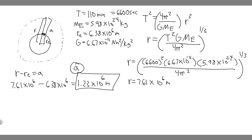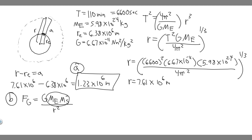Now let's move on to Part B. We're trying to find the value of g at the location of the satellite. For this, you need to know the formula for gravitational force: Fg = G × Me × Ms / r². G is the gravitational constant, Me and Ms are the masses of the Earth and satellite. You might be thinking we don't have Ms, the mass of the satellite — but we're not going to need it, and you'll see why in a second.